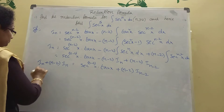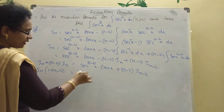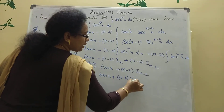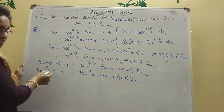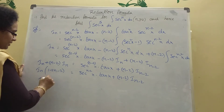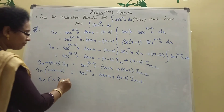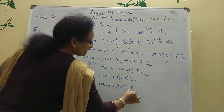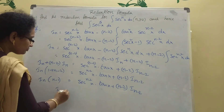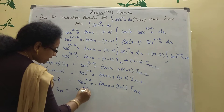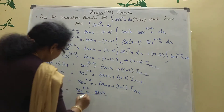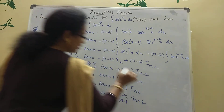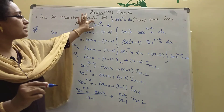Taking I_n common from the left side: I_n times (1 + n minus 2) equals secant power (n minus 2) x into tan x plus (n minus 2)·I_(n minus 2). Since 1 plus (n minus 2) equals (n minus 1), we get I_n equals secant power (n minus 2) x into tan x divided by (n minus 1), plus (n minus 2) divided by (n minus 1) times I_(n minus 2). That is the reduction formula, derived.